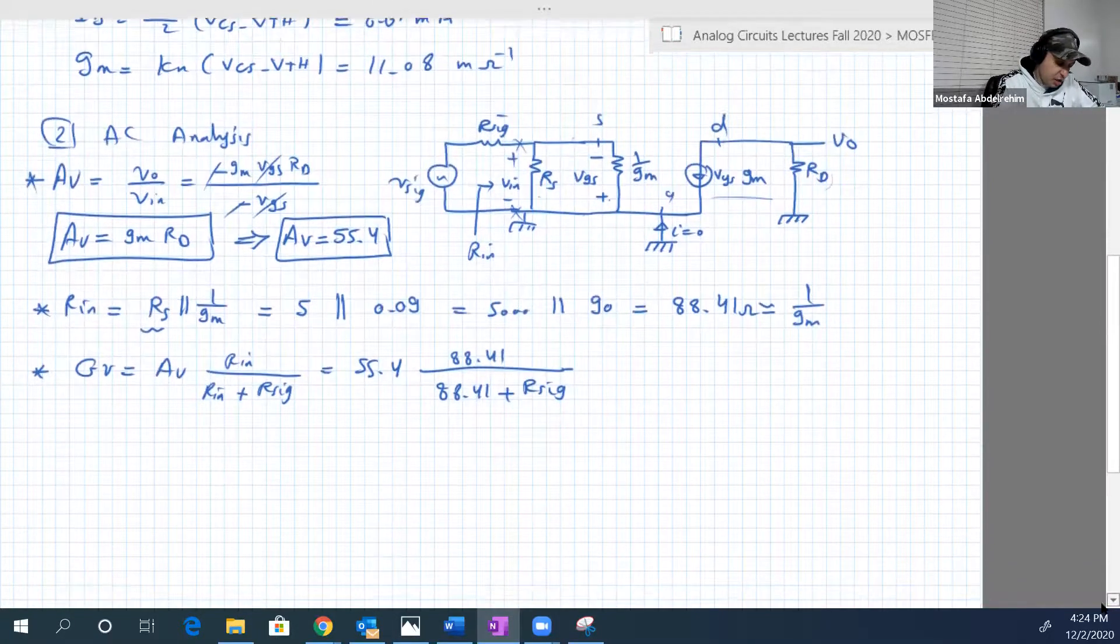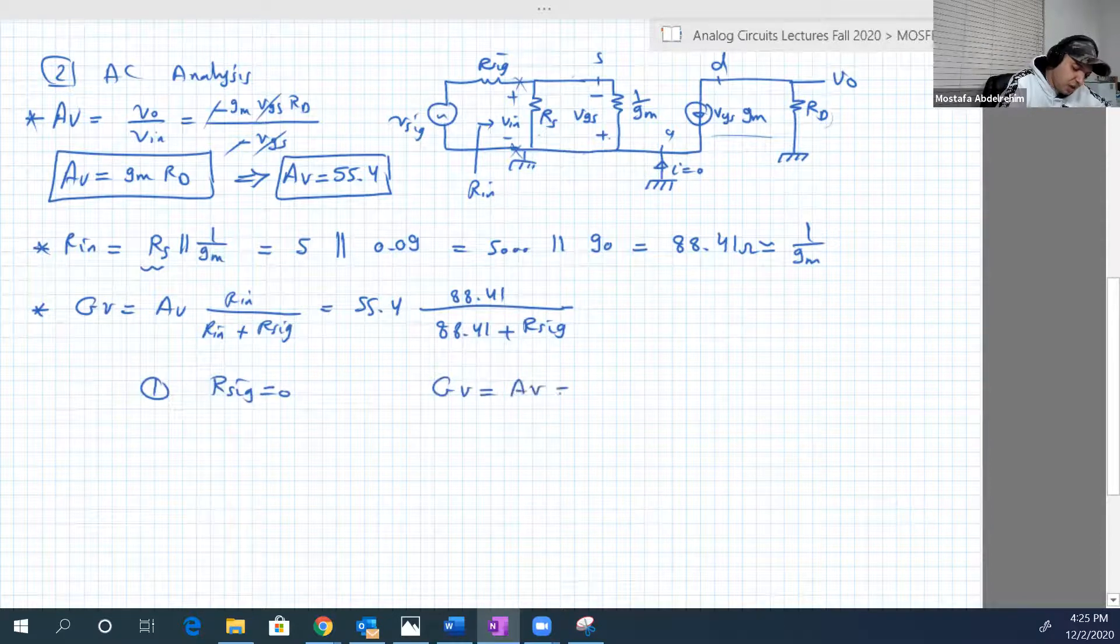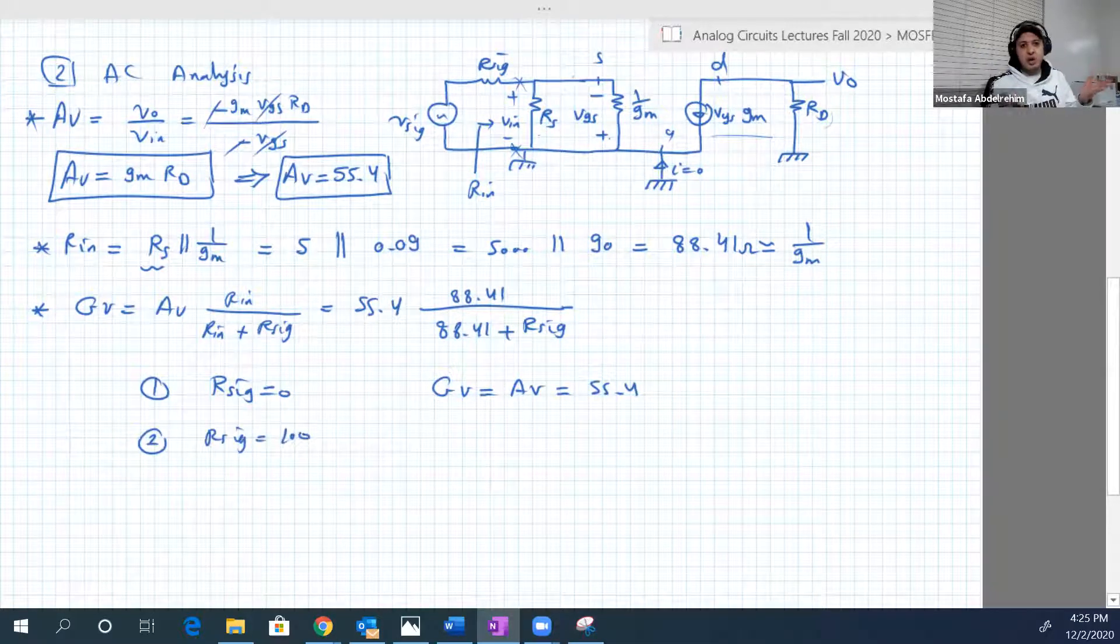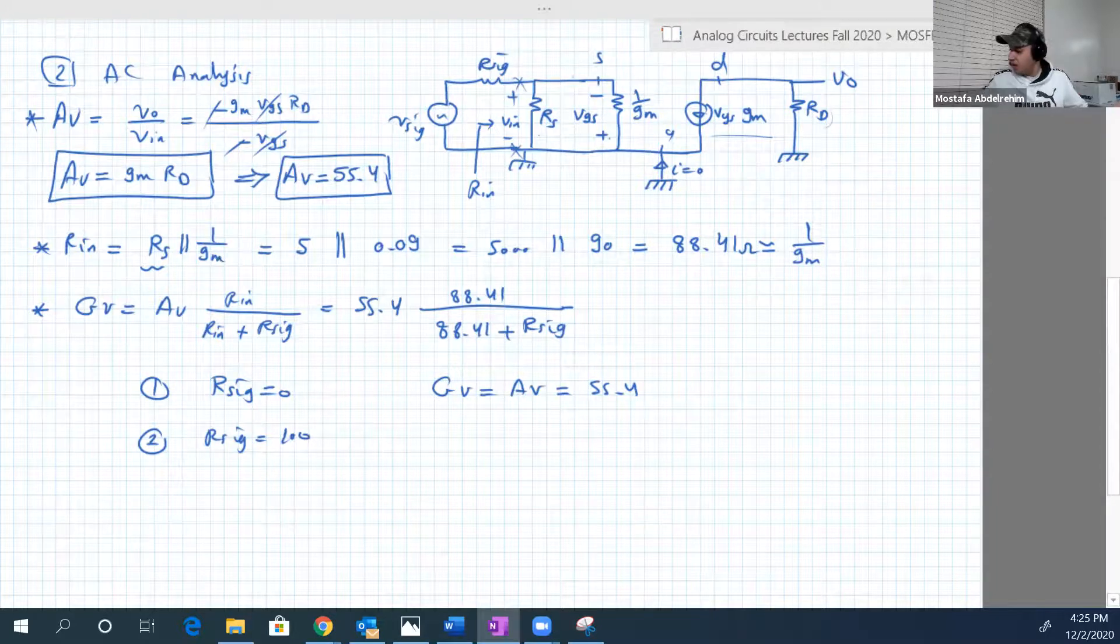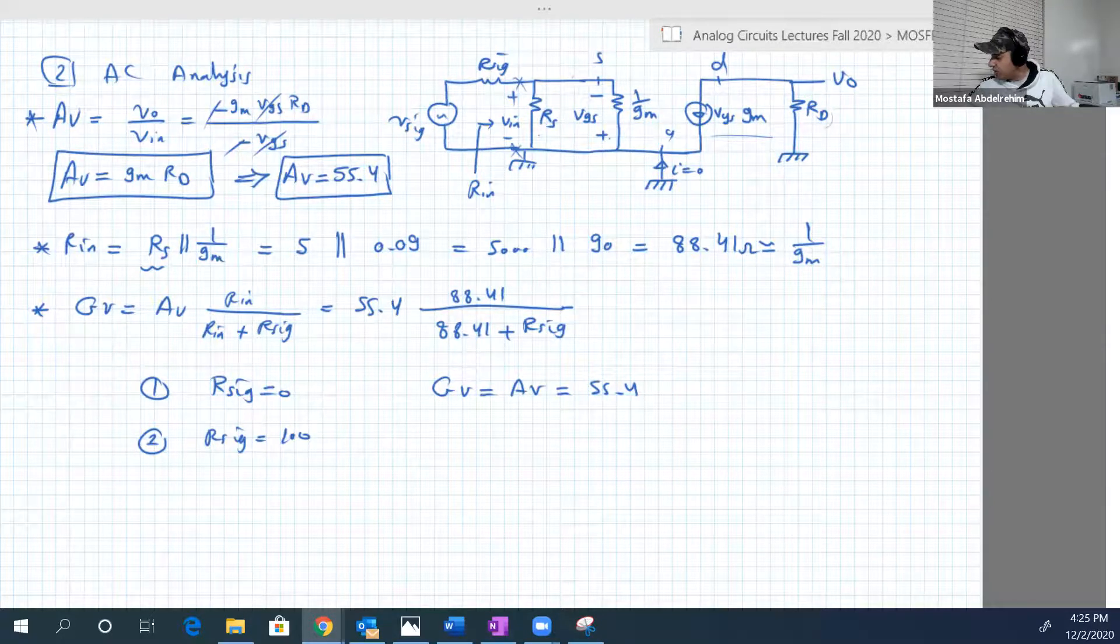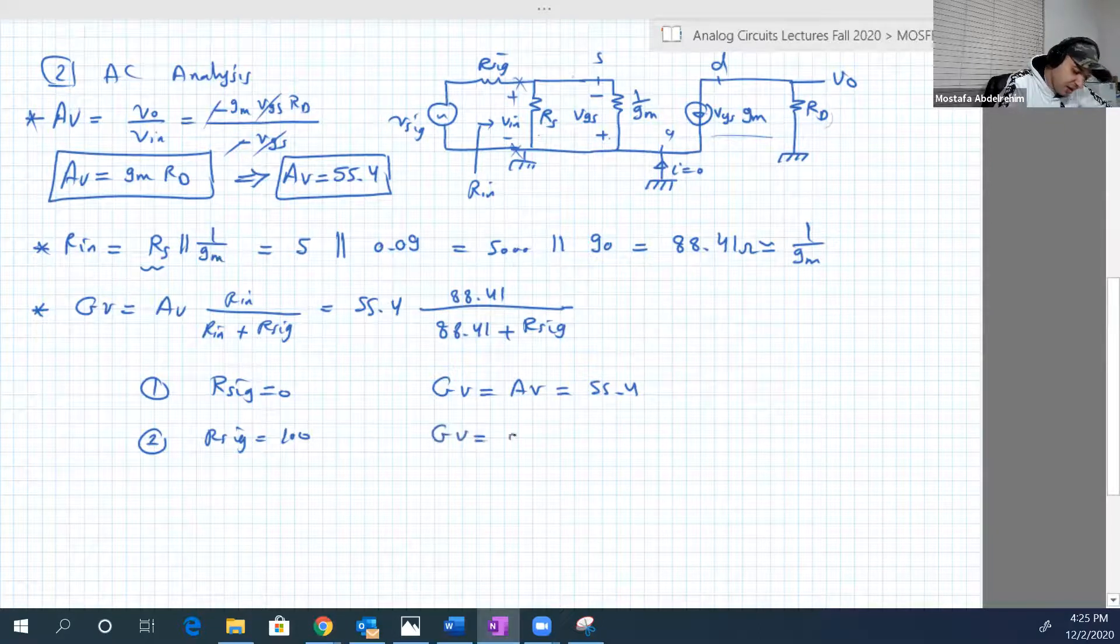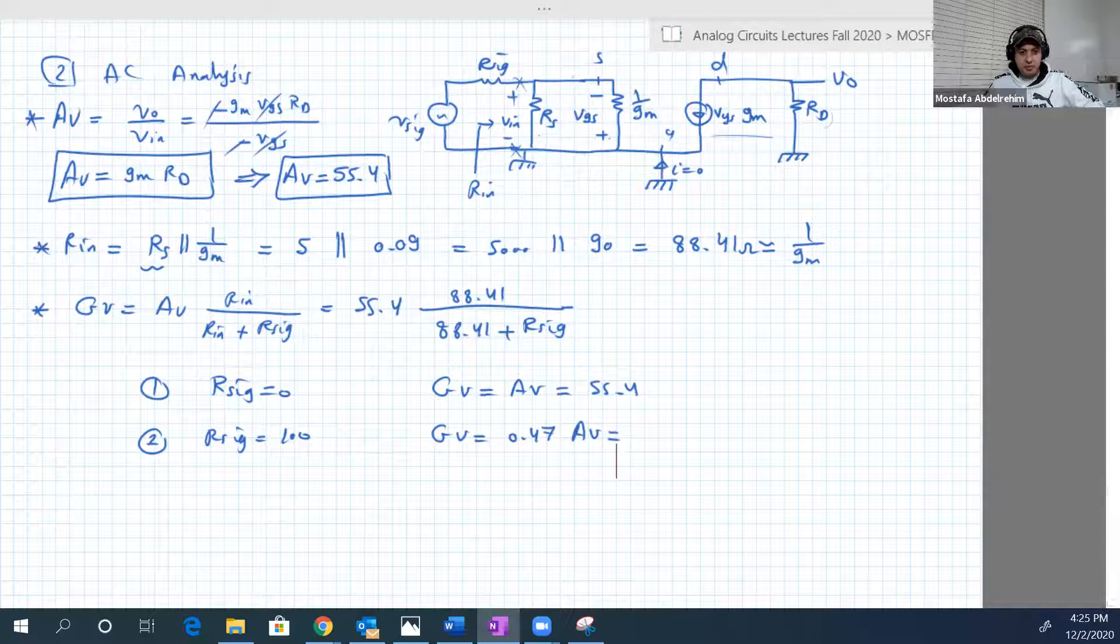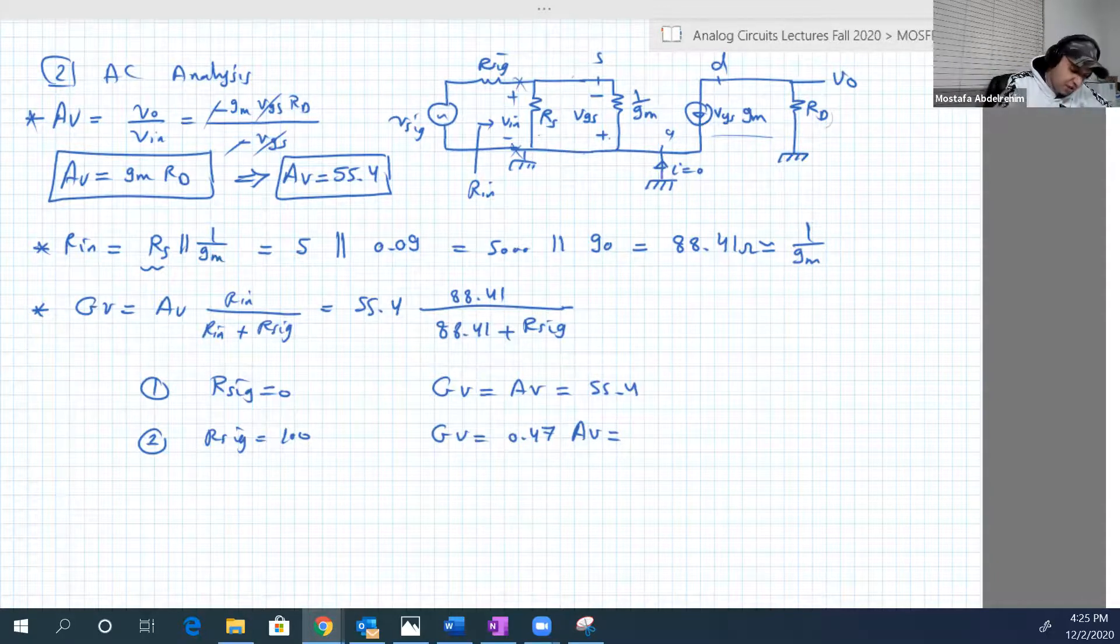So let's do some calculations here. First, let's put R signal equal to zero. In that case, GV will be equal to AV, will be equal to 55.4. Number two, let's put R signal equal to 100 ohm, which is very close to 88. So we're expecting GV to be about half AV. So 88.41 over 88.41 plus 100 ohm, it's 0.47, so GV is actually 0.47 times AV, which is approximately 26.